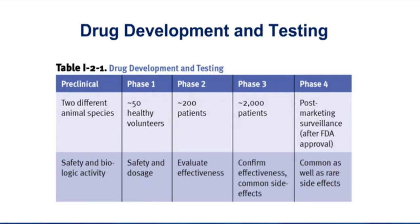If we get through phase two and find that the drug was effective, we do a more extensive phase three trial, typically with thousands of patients. The purpose of phase three is to confirm the effectiveness in a larger patient population and also to look for common side effects. Keep in mind, it has to be common side effects because you're only talking about a couple of thousand patients — you're never going to see rare side effects occur with such a small patient population.